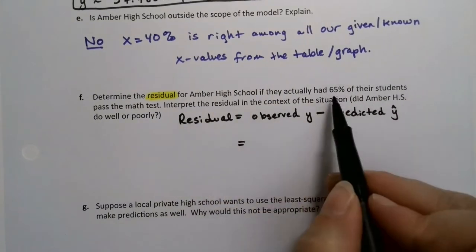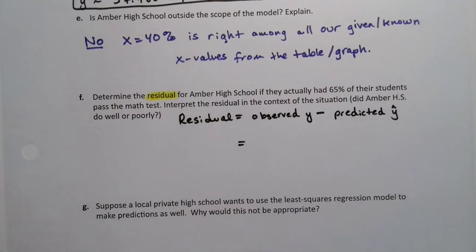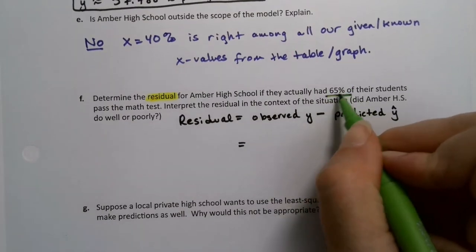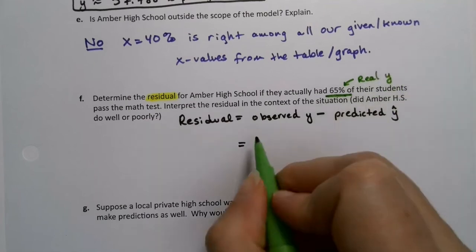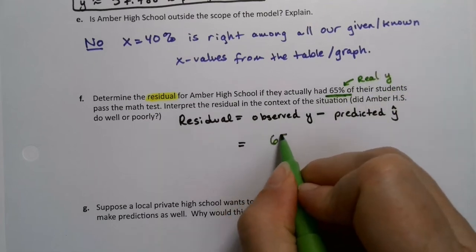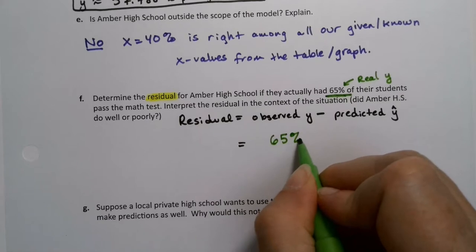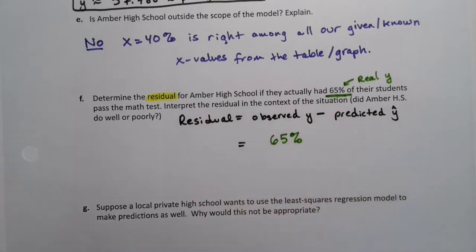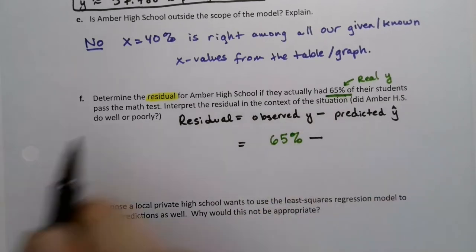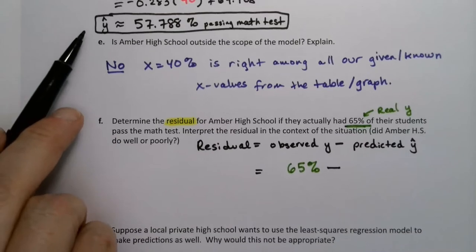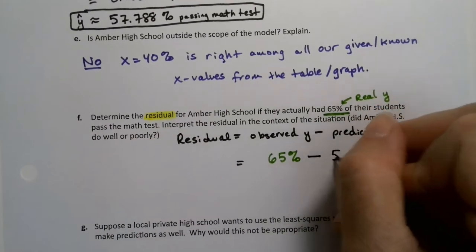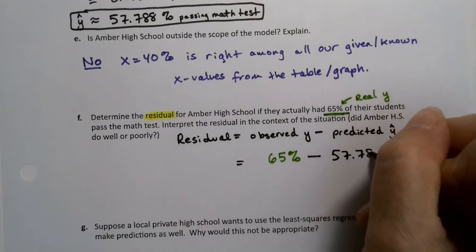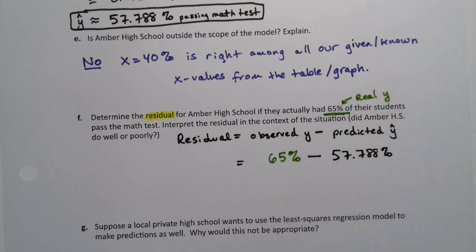So in real life, we see it right here, in real life we have 65%. That's the real y. So you're going to put 65% right here. And then you're going to subtract your prediction, which your prediction was right here for part D, which was 57.788. And that was also a percent. Percent, for lack of a better term, it's acting sort of like our unit in this case, right?